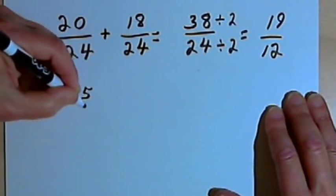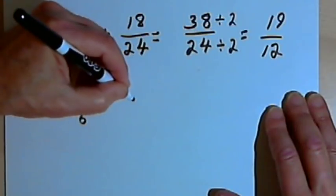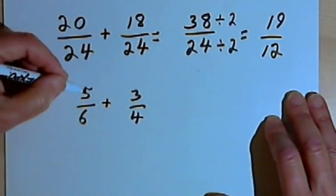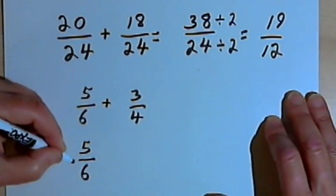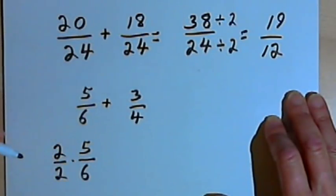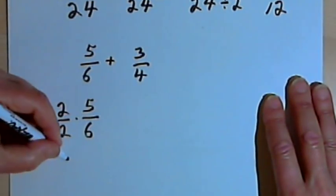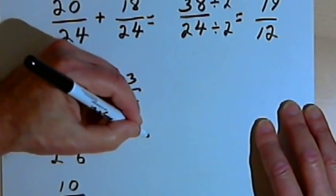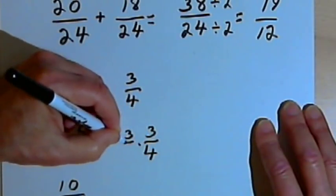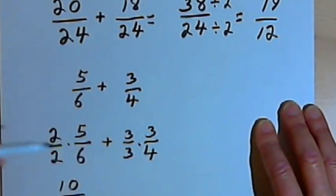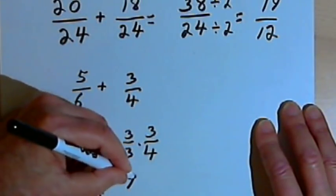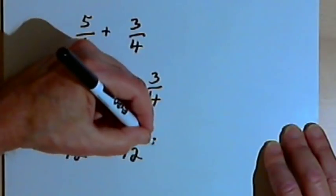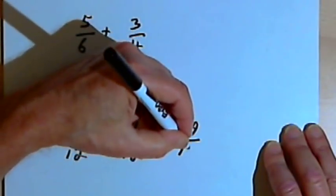Once again, that was 5 over 6 plus 3 over 4. Now the lowest common denominator is actually 12. So if I want to take the 6 from 5 over 6 and turn that into 12, I have to multiply it by 2, so I'll multiply by the fraction 2 over 2, and that's going to give me 10 over 12. Now I'll do the same process for 3 over 4 — I'll multiply that by 3 over 3, which will give me a 12 as my denominator, and 3 times 3 is 9, 3 times 4 is 12. The denominators are the same, so I can add the numerators, and I get 19 over 12.